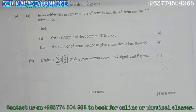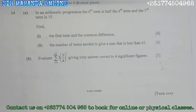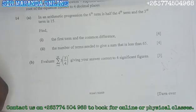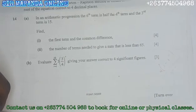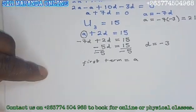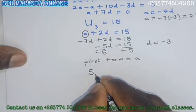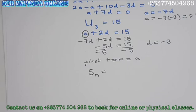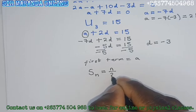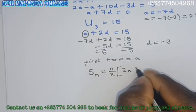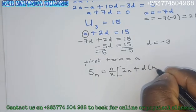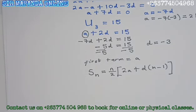Part A2: Find the number of terms needed to give a sum that is less than 65. So they want you to find the number of terms where the sum is less than 65. The formula for the sum of the first N terms in an AP is: S_N equals N over 2, open bracket, 2A plus D open bracket N minus 1. This is the formula we'll use.